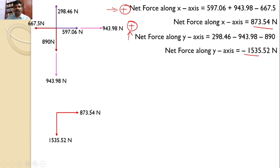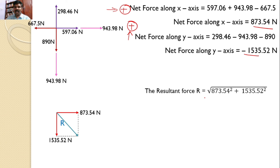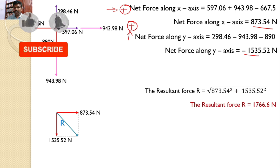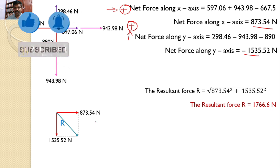Using the parallelogram law, the resultant of these two component forces has magnitude R equal to the square root of (873.54² + 1535.52²), which gives the resultant force R equal to 1766.6 Newtons.